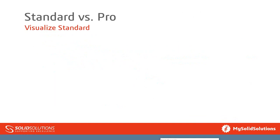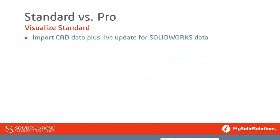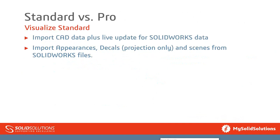Standard versus Professional — what do you get with Visualize Standard? This is the free version that comes with SOLIDWORKS Professional and Premium. In Standard you can import CAD data live from SOLIDWORKS, import appearances and decals, and also scenes directly from the SOLIDWORKS files themselves. You can live-link this between them so a change in one will come through as well. You can do static renders of essentially unlimited resolution — there's a cap of around half a million pixels but you're unlikely to hit it.